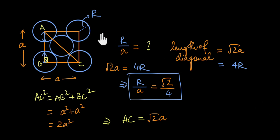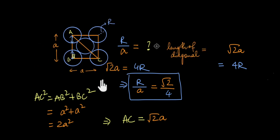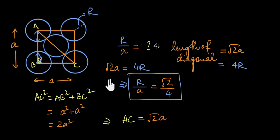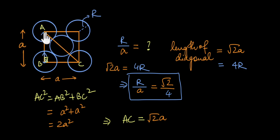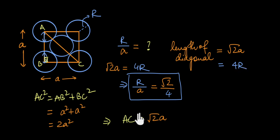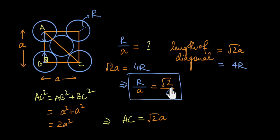In other words, it doesn't matter whether the circles are smaller or bigger — the atoms will always touch each other across the diagonal, so the diagonal is always 4r. And since the diagonal of a square is always √2 times the edge a, r/a will always equal √2/4.